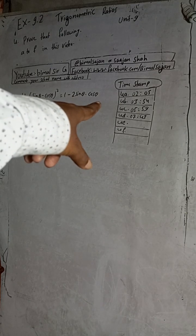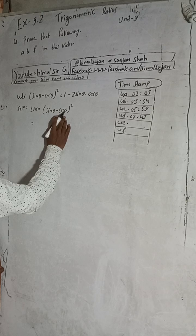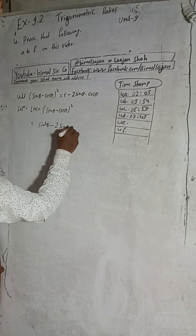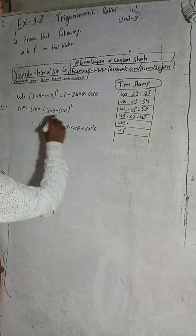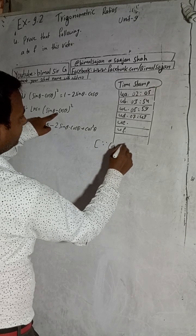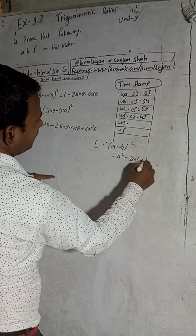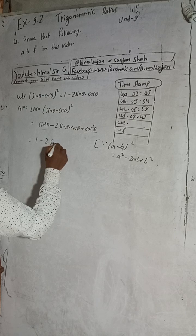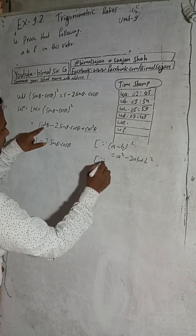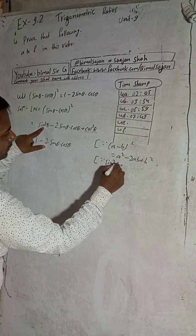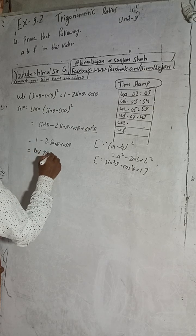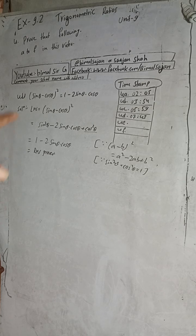This is question number 4d. The timestamp is 7 minutes 43 seconds. The LHS is (sinθ − cosθ)². The formula for (a − b)² = a² − 2ab + b², so this gives sin²θ − 2sinθcosθ + cos²θ = 1 − 2sinθcosθ. This is the solution of 4d.